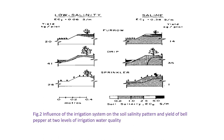This picture shows the effect of irrigation system on soil salinity pattern and yield of bell pepper at two levels of irrigation water quality — yield in kg per hectare for saline soil and low salinity. In low salinity, the growth of pepper crop is good as compared to the saline condition due to the accumulation of high amount of salinity.